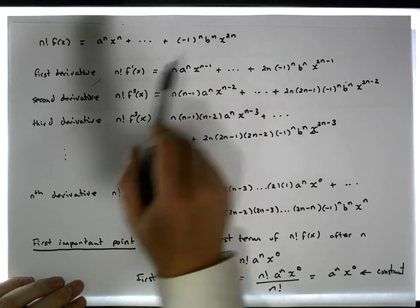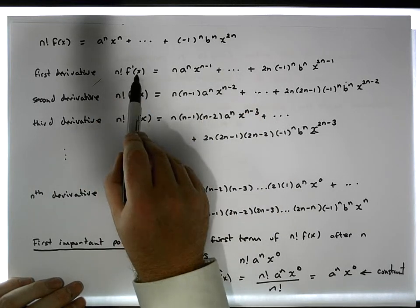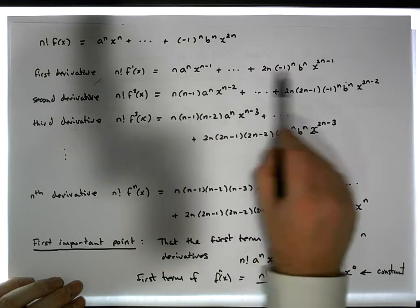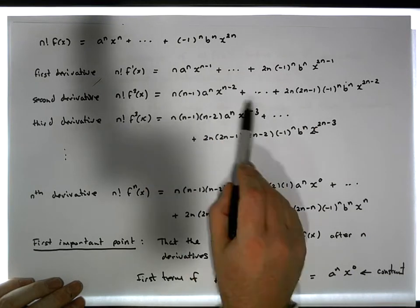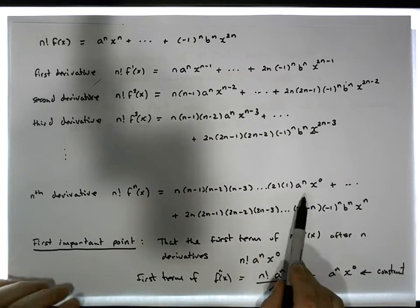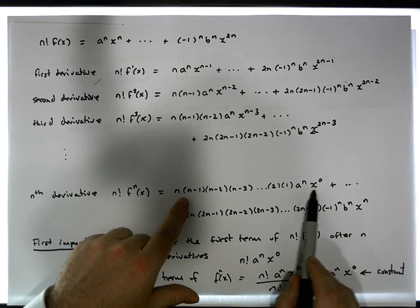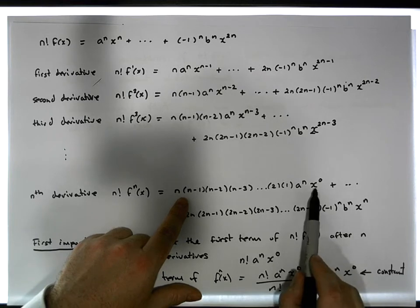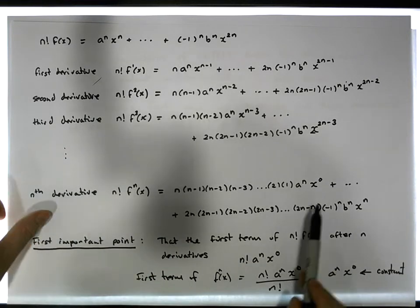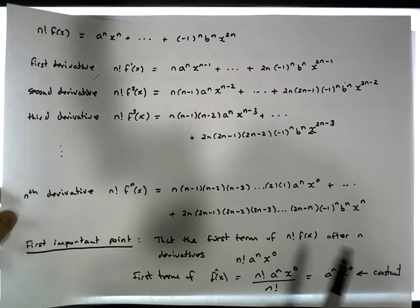The first derivative when I substitute in zero for x is going to be zero, and all of them are going to be zero, so that's going to fall off to zero. The only place where it's not going to be zero is when there's no indeterminate in the term, which is on the nth derivative. After the nth derivative, we end up with a constant term, and that's important.